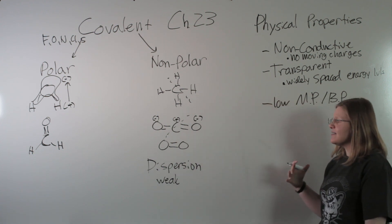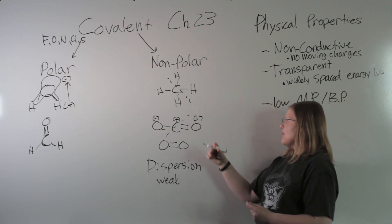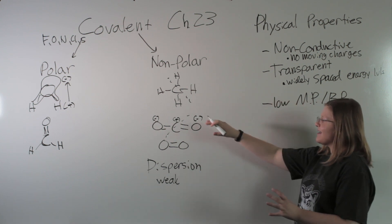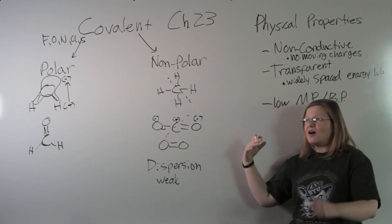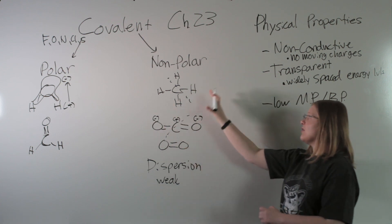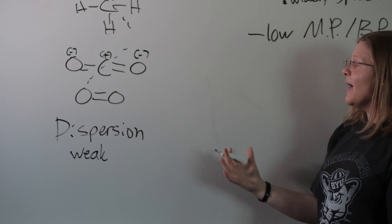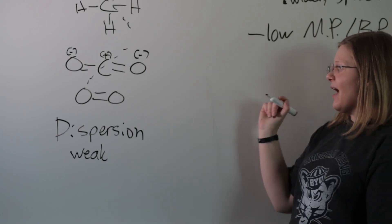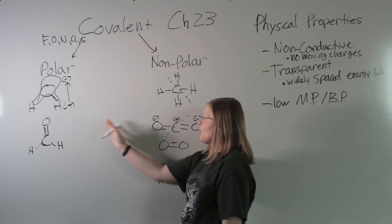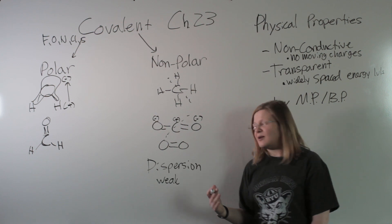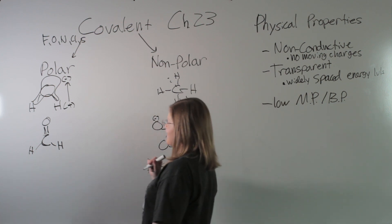Dispersion forces form from spontaneous temporary dipoles. These dipoles form because of the random nature of electrons — for an instant, a nonpolar molecule can have more electrons on one side than the other, forming a weak temporary dipole that can attract other nonpolar molecules. It's not as important to know exactly how dispersion forces work, but know that they're very weak — the weakest intermolecular force we have. Polar molecules have stronger intermolecular forces.